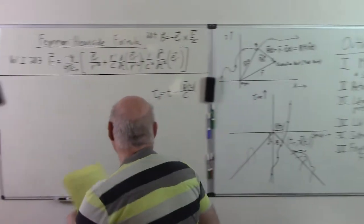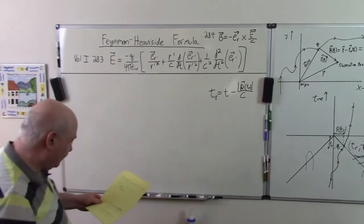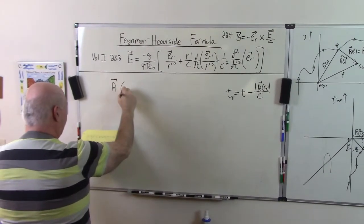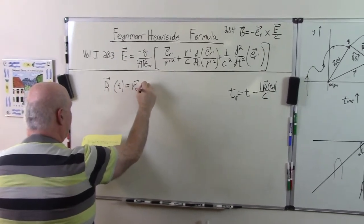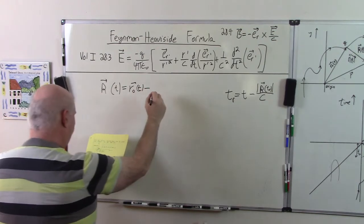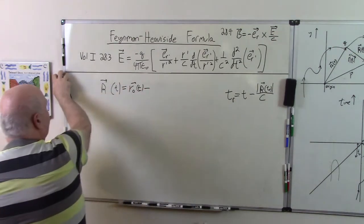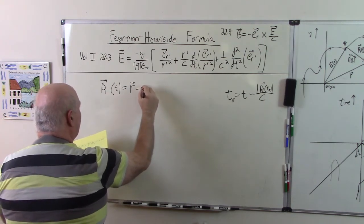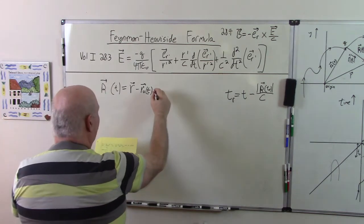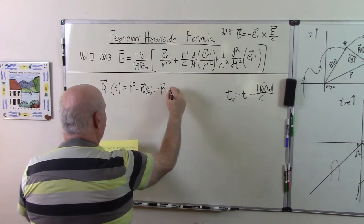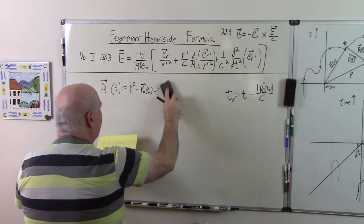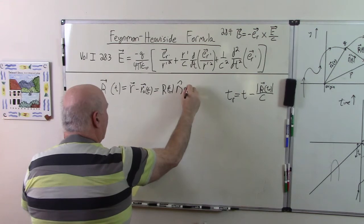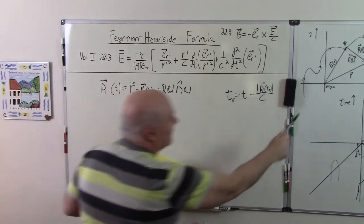And now I just want to define a few things. So we have that, as we've already defined several times, r of t is equal to r minus r zero t, and we can also write that as two ways to write that vector r over there.